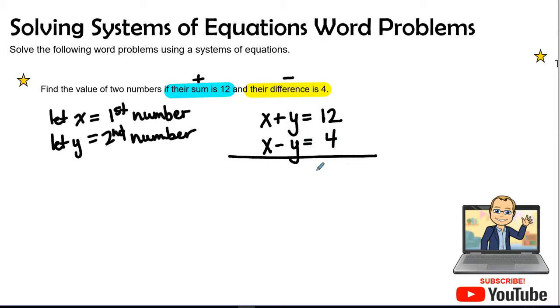Let's go ahead and solve this system. We see Y's cancel out or zero out, leaving me with two X. Two X equals 16. When I divide by two on both sides, X will equal eight. There is our first number.